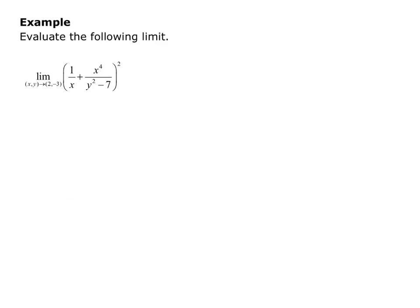In our example, we're asked to evaluate the following limit: the limit as (x, y) goes to (2, -3) of the function (1/x + x⁴/y²  - 7)². So what we want to do is check that this function is continuous and defined at the point (2, -3).